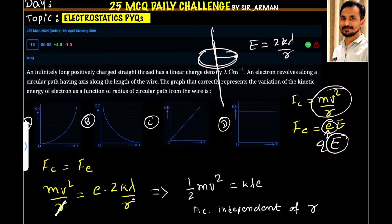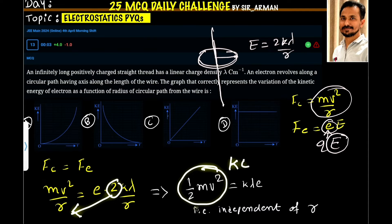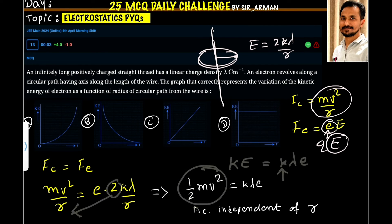So now this r and r will get cancelled. I am just bringing this two here. So this becomes half mv square. Now, half mv square is the kinetic energy which equals to k lambda into e, where k is coulomb's constant. So it is constant. Lambda is the surface charge density, so it is also constant. And e is the charge of electron which is also constant. Means the kinetic energy is independent of the distance r.